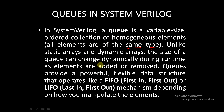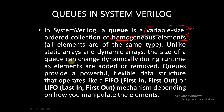There are some important points in this definition. A queue is a variable-sized ordered collection — variable-sized like dynamic arrays. It is a collection of homogeneous elements, meaning all elements are of the same type, whether logic, integer, or any other data type. Unlike static and dynamic arrays, the size of the queue can change dynamically during runtime as elements are added or removed. Queues provide a powerful, flexible data structure operating like FIFO or LIFO.